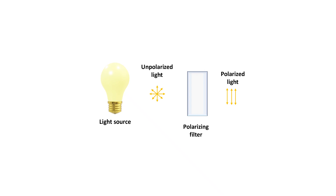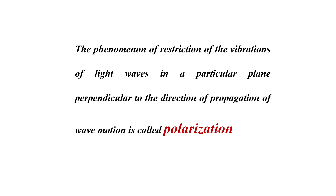As you may see here, these vibrations are confined to a single plane, producing what we call plane polarized light. So polarization is the process of converting unpolarized light into polarized light. We can say that the phenomenon of restricting the vibrations of light waves to a particular plane perpendicular to the direction of propagation is called polarization of light.